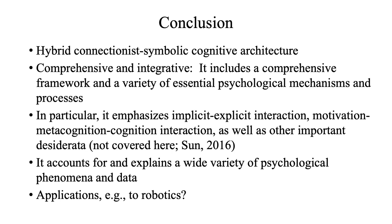In conclusion, Clarion is a hybrid connectionist-symbolic cognitive architecture, meant to be comprehensive and integrated. It includes a comprehensive framework and a variety of essential mechanisms and processes. In particular, it emphasizes the implicit-explicit interaction, the motivation-metacognition-cognition interaction, as well as a number of other important desiderata not covered here. It accounts for and explains a wide variety of psychological phenomena and actual empirical data. It is conceivable that it can also be applied to robotics in a number of different ways.